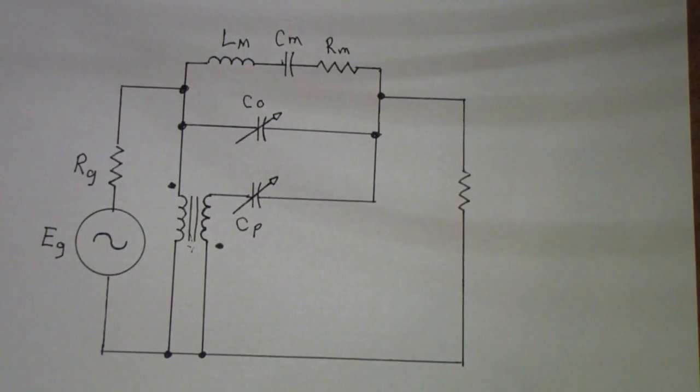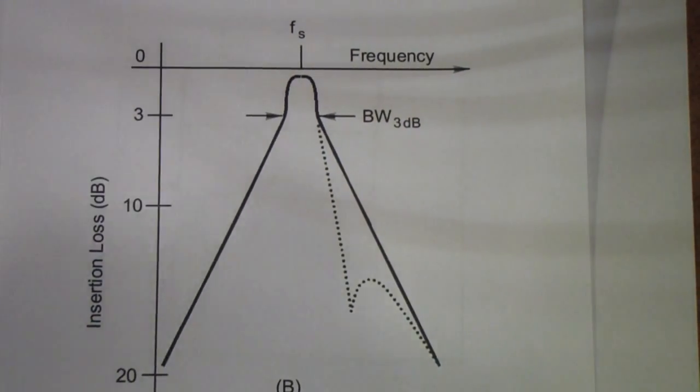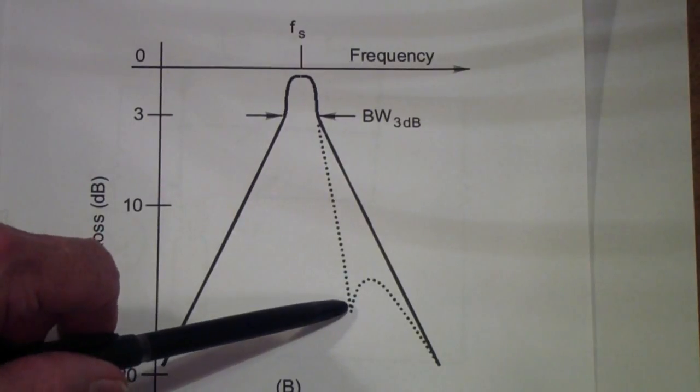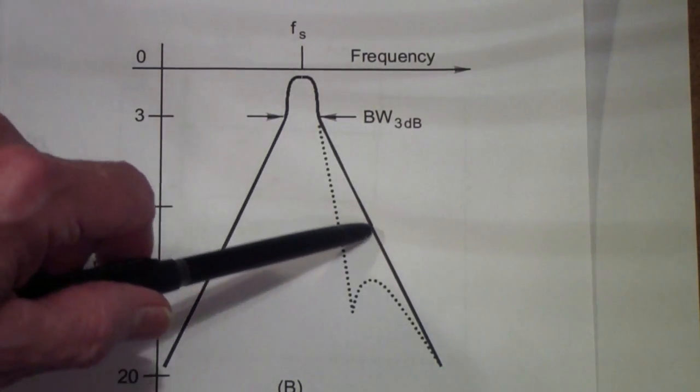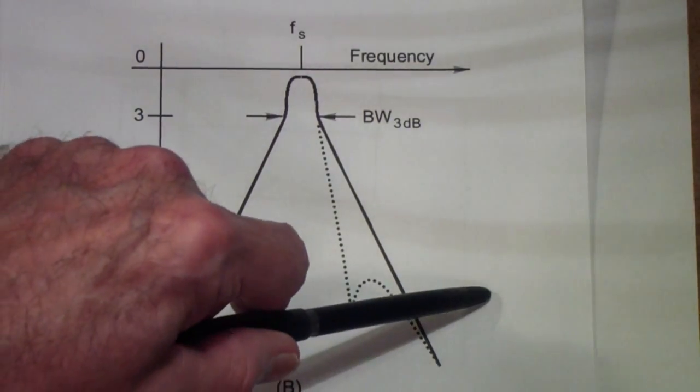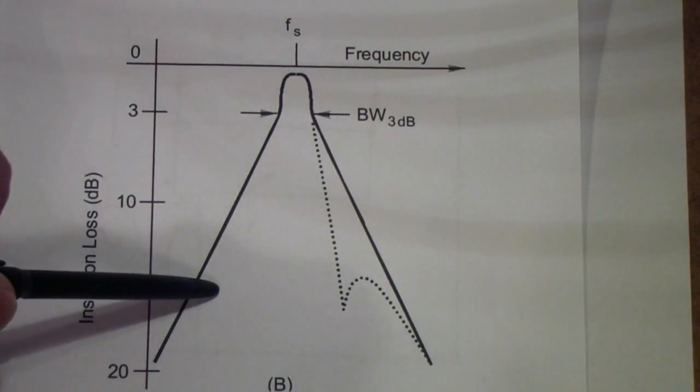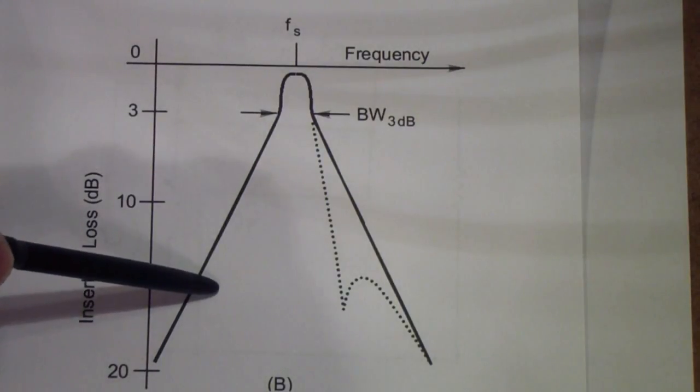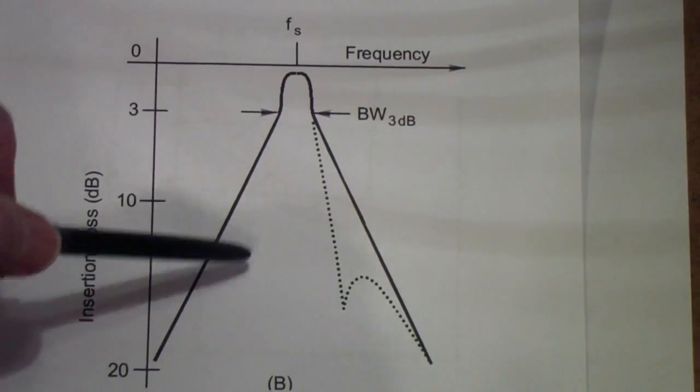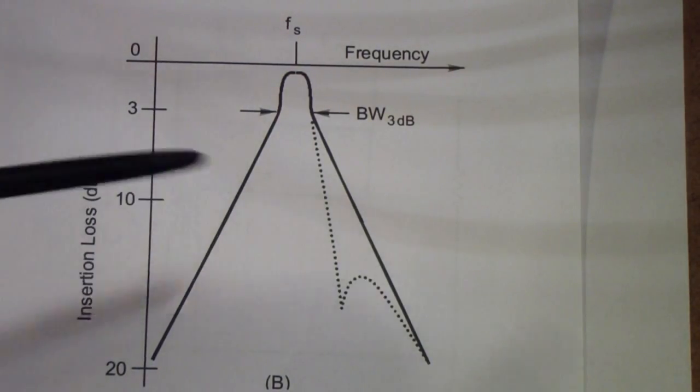So, that is this capacitor. It's the trimmer capacitor for the phasing control. Now, there also is a phasing control that allows you to move this null. You notice that depending on how you have that capacitor set this null could be out here it could be here it can even be on this side if you adjust the capacitance to a very large value it can actually cause the null to appear on the downside of the of the crystal's response.